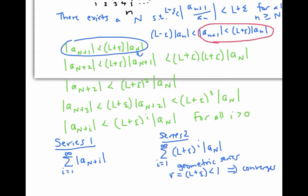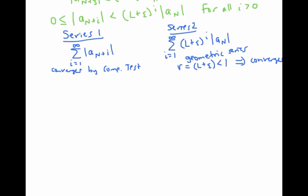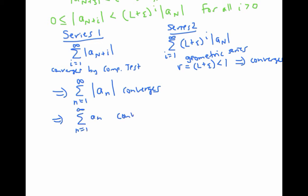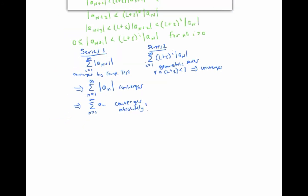That's great news, because now looking at this inequality, we can show that series one converges just using the ordinary comparison test, recognizing that these terms are greater than or equal to zero. So series one converges by the comparison test. But series one is just the tail end of the series, the sum from n equals one to infinity of the absolute value of a sub n. So this series converges, because it's just finitely many terms added on to a convergent series. And so we've shown that our original series converges absolutely. This proves the first part of the ratio test.